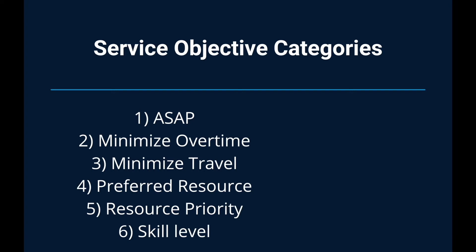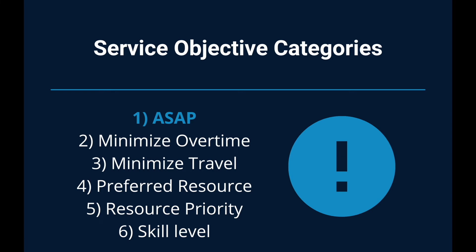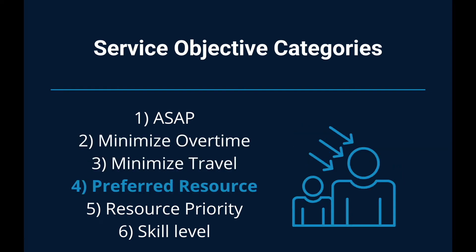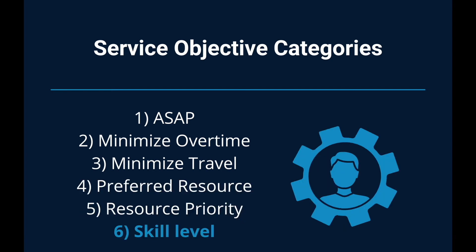Service objectives in field service fall under the following categories. The first is ASAP, which is getting the job done as soon as possible. Next is minimizing overtime. Additionally, minimizing travel. The fourth one is preferred resource. The fifth being resource priority. And finally, the skill level.